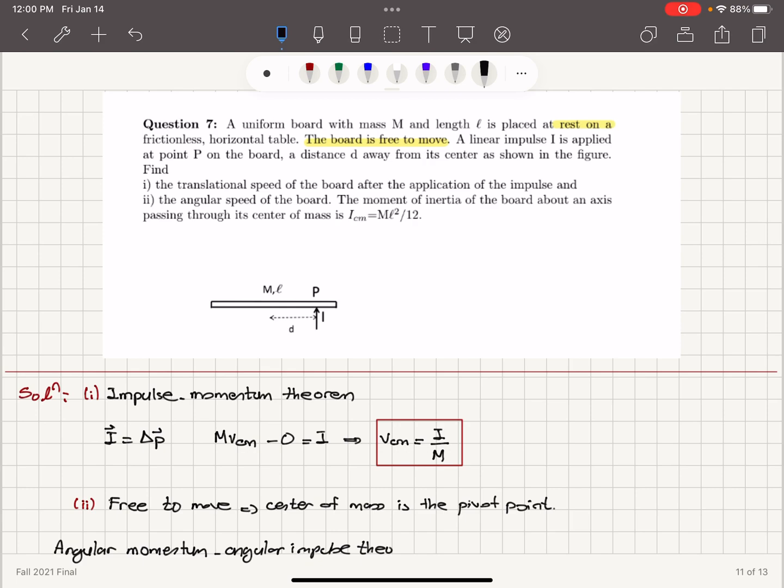The angular impulse theorem says that the angular impulse I theta, which is R cross I. Basically, we have a distance D from the center, so it's D times I. We go from the center to the point of application of the impulse, so we have D cross I.